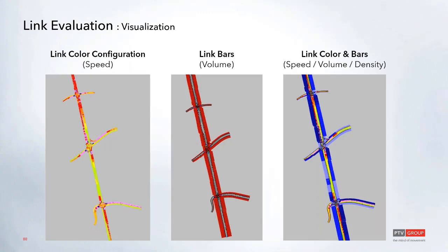Using these results, we can also do some visualization. The first option is to color the links based on an attribute — in this case, speed. You can also add link bars, which add width along each link, in this case showing the volume attribute. These can be combined: link color by speed, link bar thickness by volume, and bar color by density. There are many visualization options directly within VISSIM.